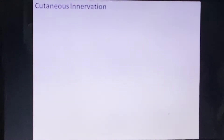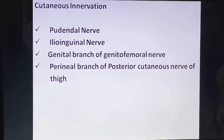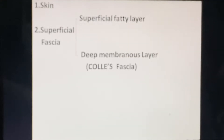The cutaneous innervation of the urogenital region is supplied by: the pudendal nerve, ilioinguinal nerve, genital branch of the genitofemoral nerve, and the perineal branch of the posterior cutaneous nerve of the thigh. When dissecting the urogenital region, the layers encountered are: skin, superficial fascia — which has two parts: superficial fatty and deep membranous layer, known as Colles' fascia — then deep fascia, again with two parts: the perineal membrane and endopelvic fascia.